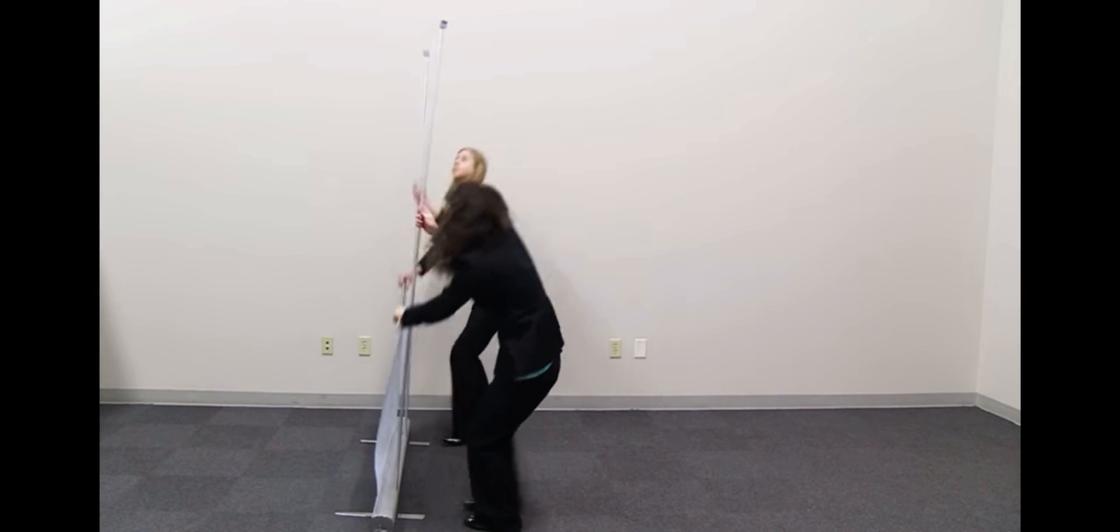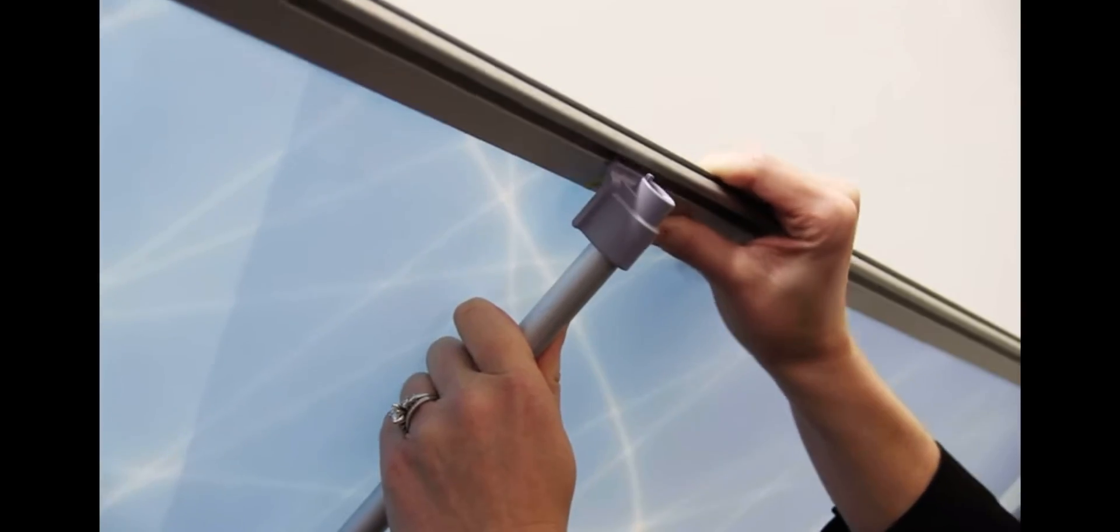In tandem with another person, lean display back and gently pull up the banner rail. Insert banner rail onto the poles grooves.